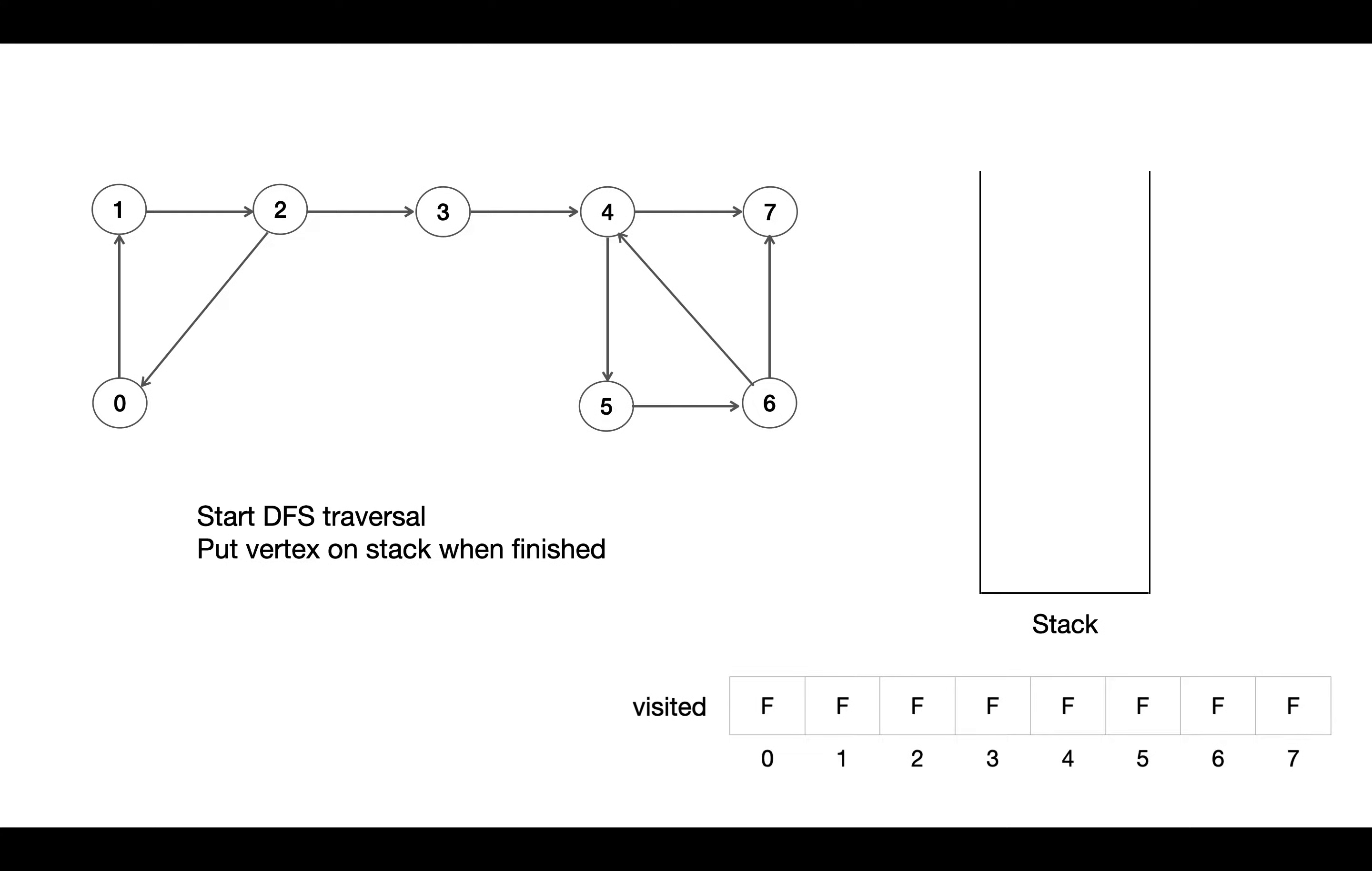Now we start visiting nodes starting from 0, traverse and mark it as visited. Then there is just one outgoing edge, we traverse vertex 1 and mark it as visited, then 2. From 2 there are two outgoing edges. 0 is already traversed so we go to 3. From 3 we traverse 4, and then there are two child nodes. We traverse 5 first, then from 5 we go to 6, and from 6 we traverse its child node which is 7.